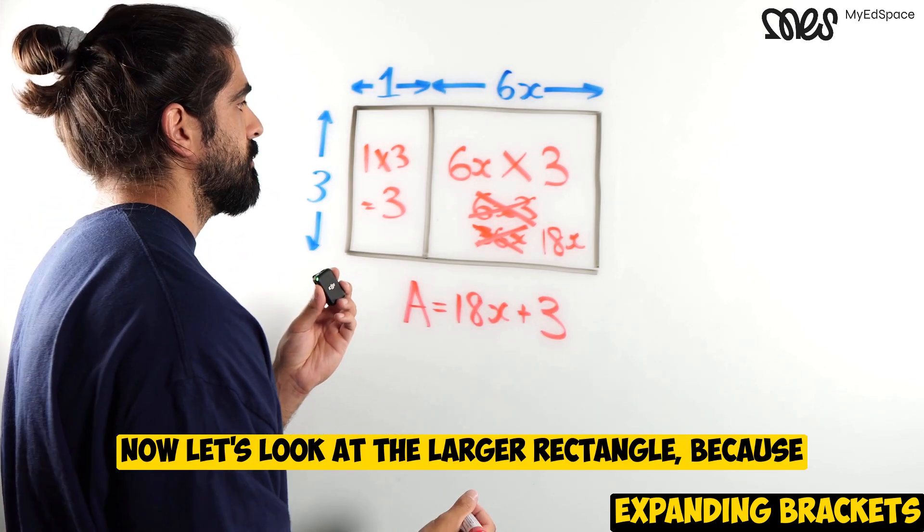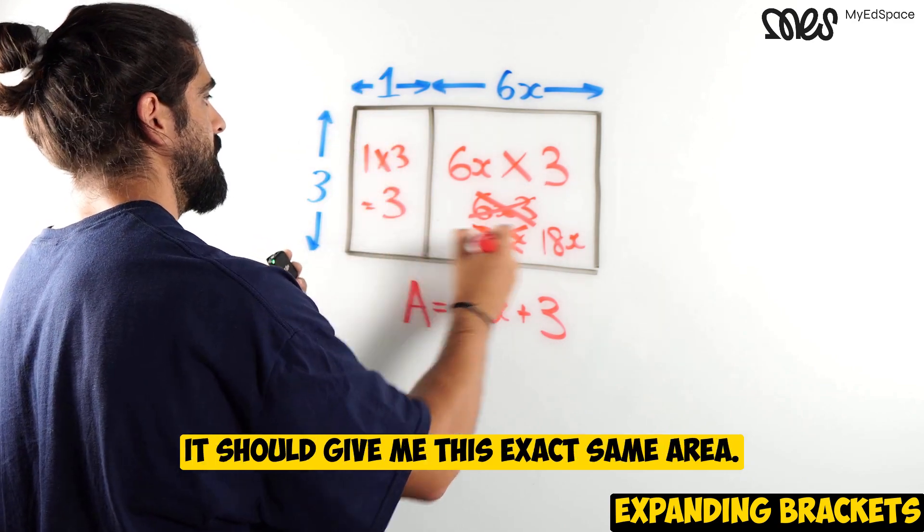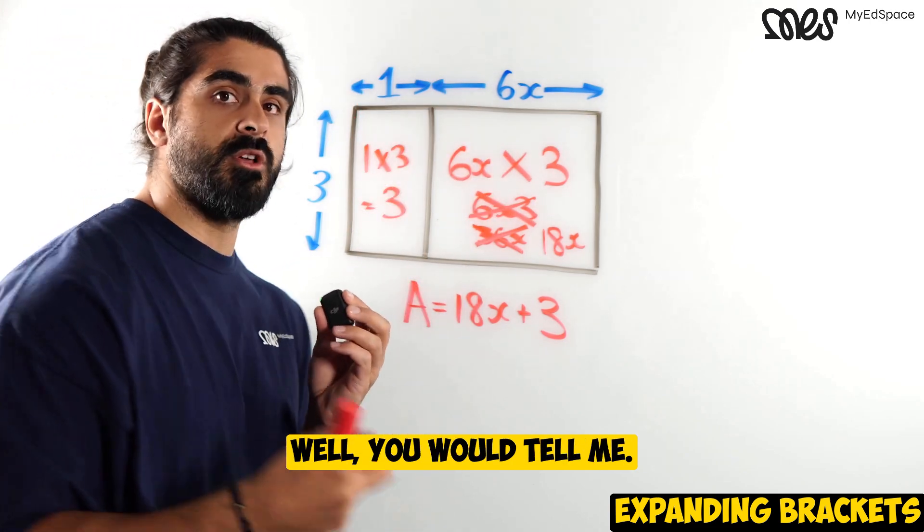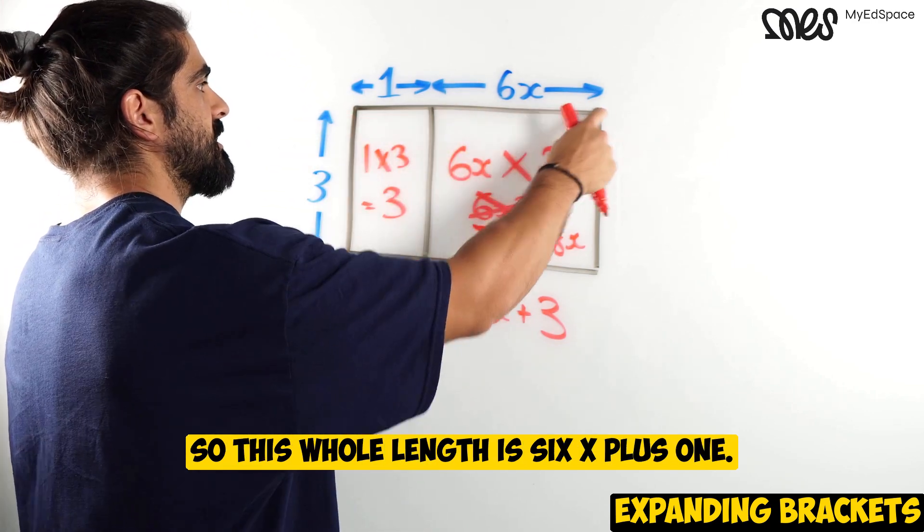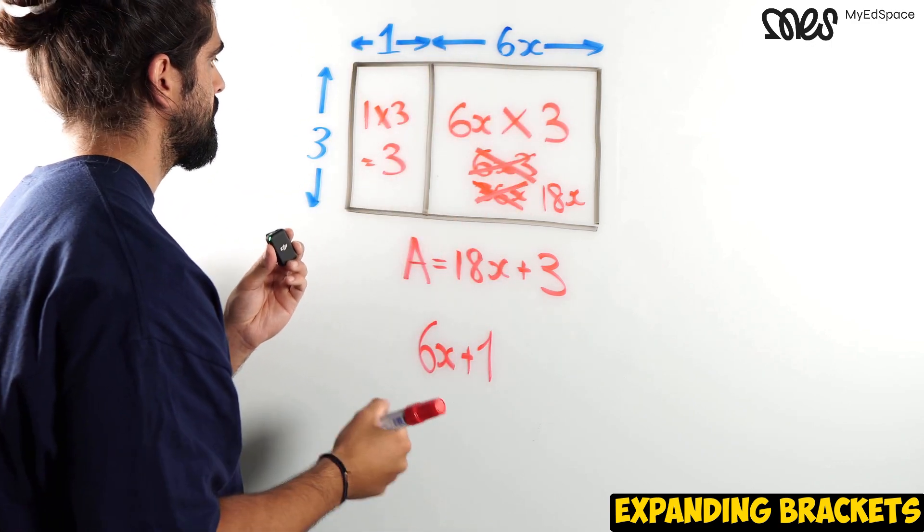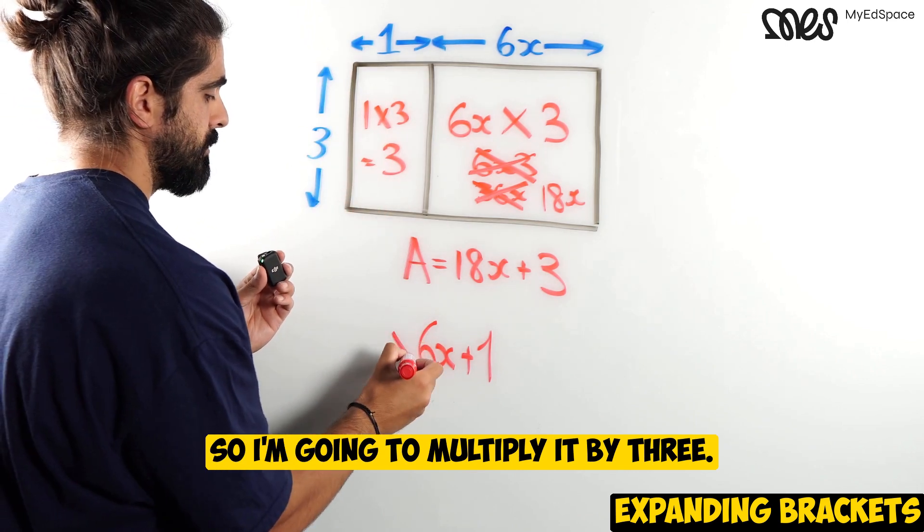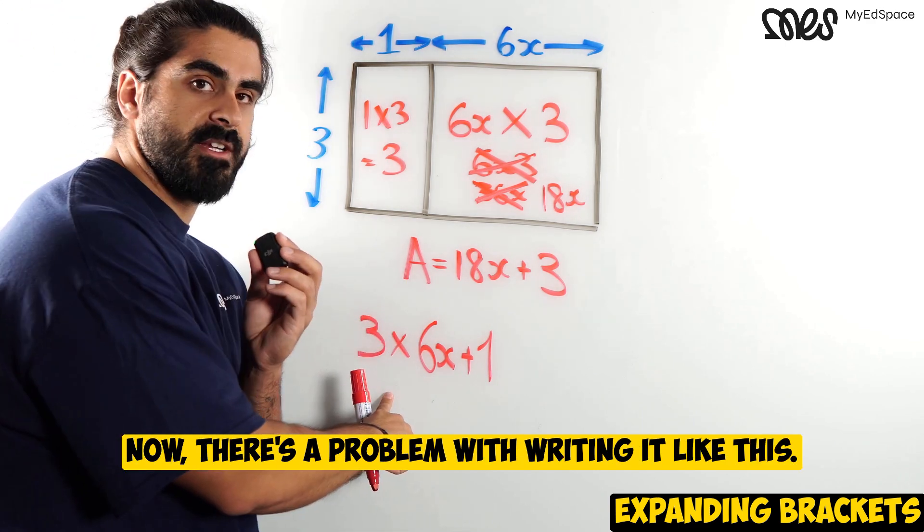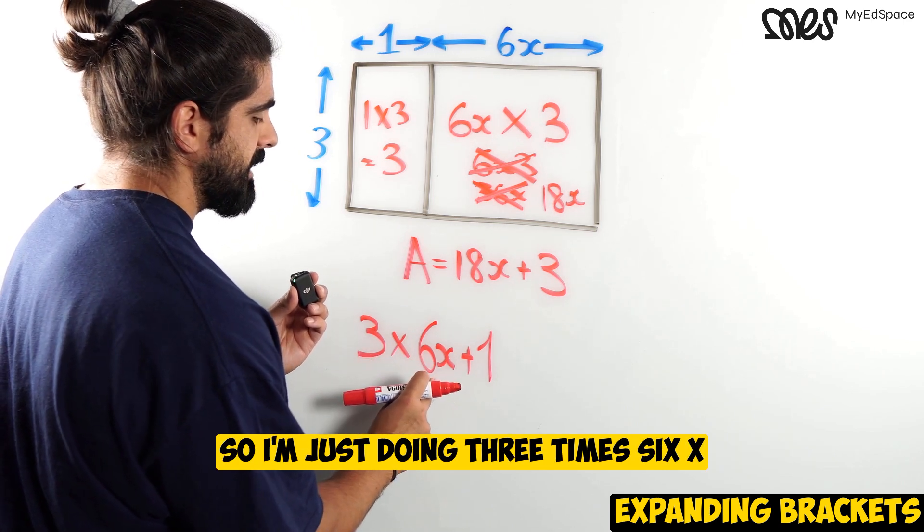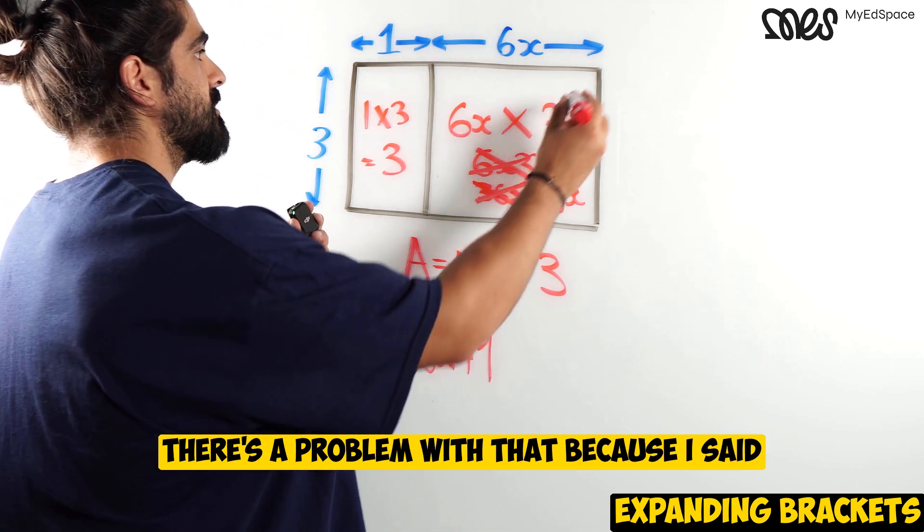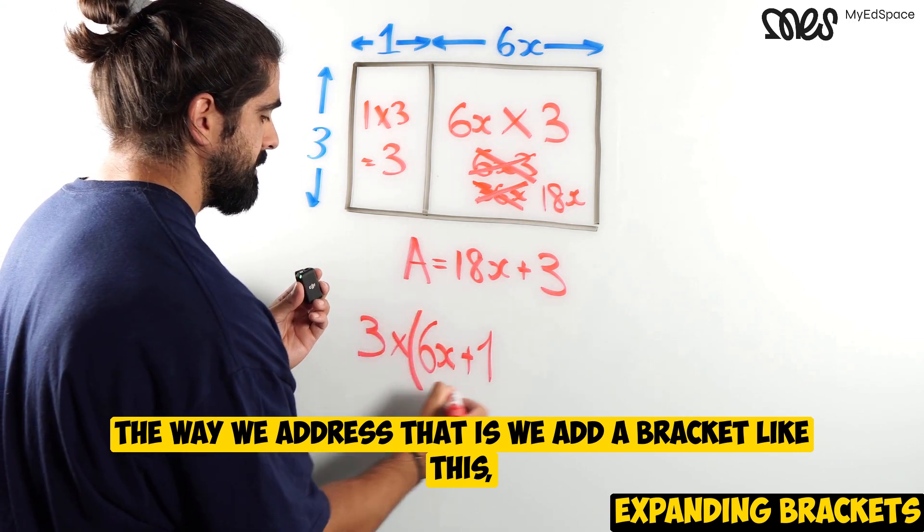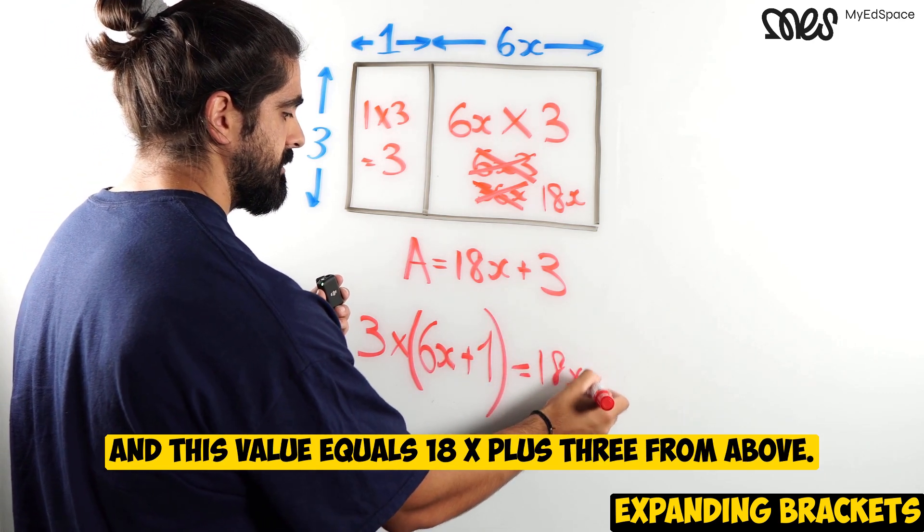Now, let's look at the larger rectangle, because if I looked at this whole length times this whole length, it should give me this exact same area. So what is this length if this is 6x and this is 1? Well, you would tell me you just need to add those two together. So this whole length is 6x plus 1. So we have 6x plus 1. That's this length here. Then I need to multiply it by 3. So I'm going to multiply it by 3. Now there's a problem with writing it like this. If you read it as it is, I'm doing BIDMAS, remember? You would do the multiplication first. So I'm just doing 3 times 6x and then the 1 is at the end.